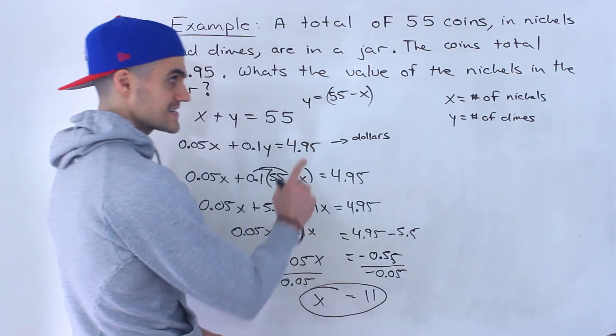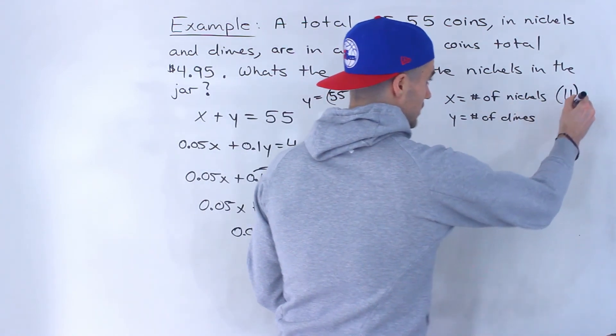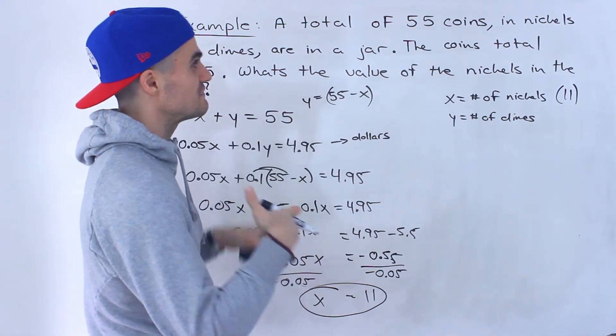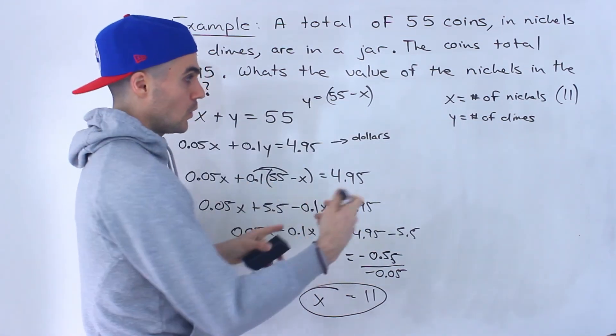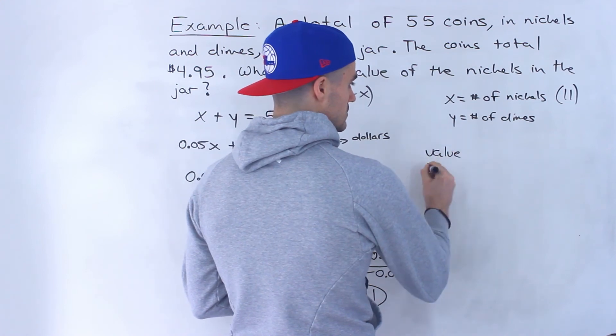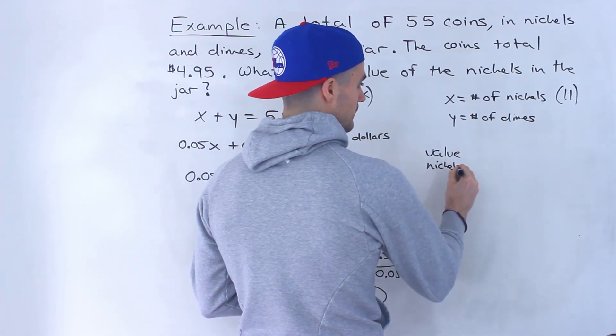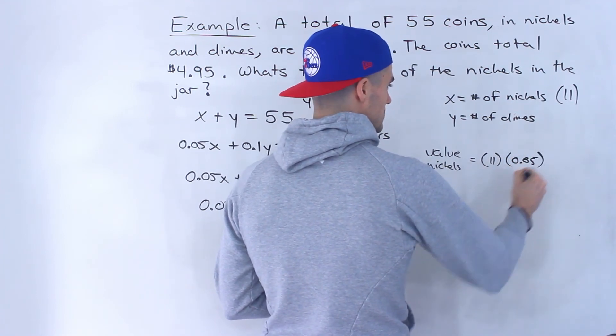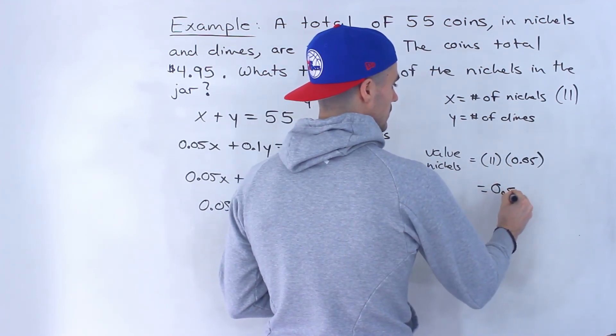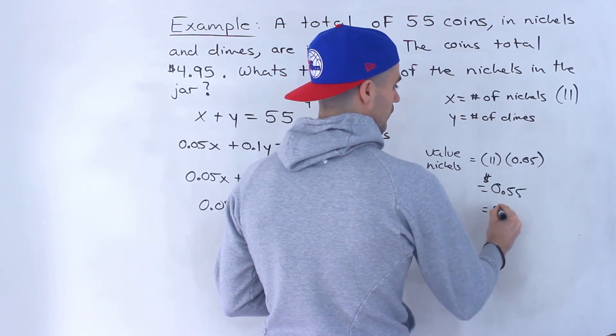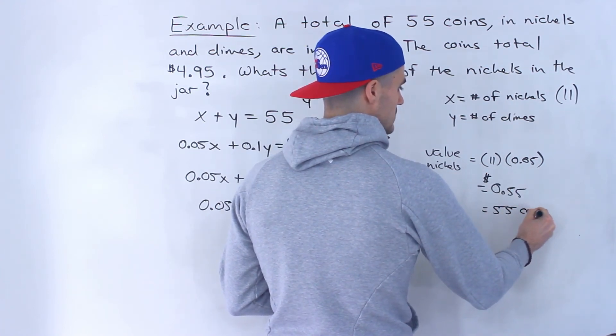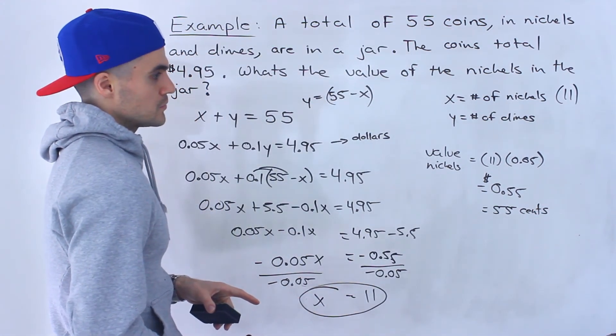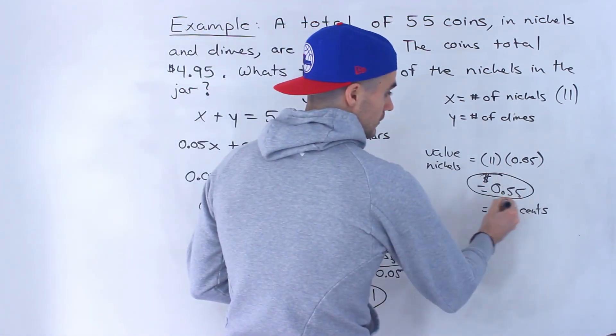So what's x? x is the number of nickels. There's 11 nickels. And actually, based on the question, we actually don't even have to solve for y. They're asking, what's the value of the nickels in the jar? Well, the value of the nickels, if there's 11 of them, each nickel is worth 5 cents. So we would get 0.55 dollars or 55 cents. That would be the value of the nickels.